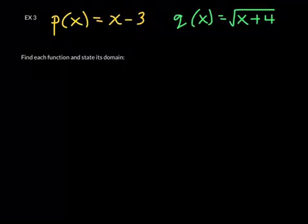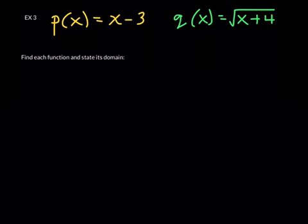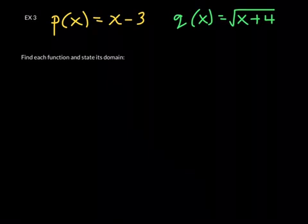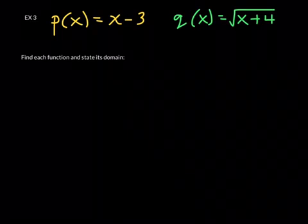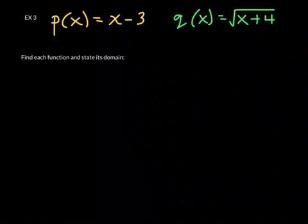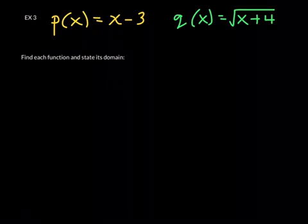Okay guys, we finally reached the last example under this objective of combining functions. So finally, we have a couple different functions. p(x) = x - 3, a linear function. q(x) = sqrt(x + 4), this is a radical function or square root function. What we're going to do is find a couple of functions here and state its domain.